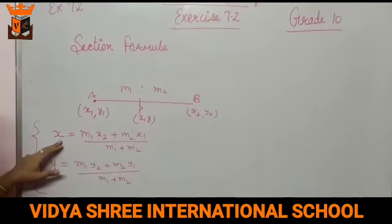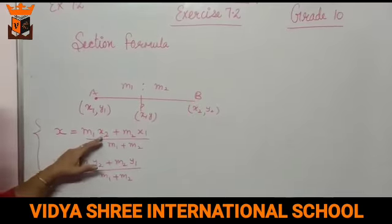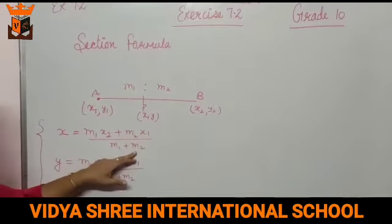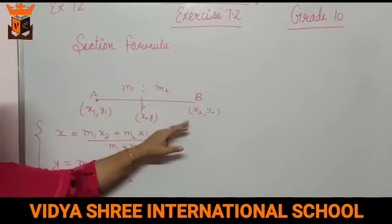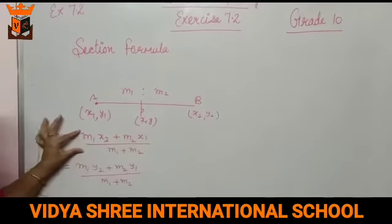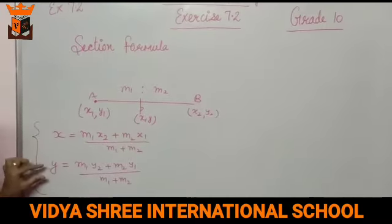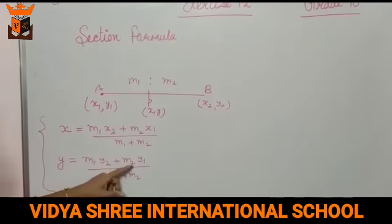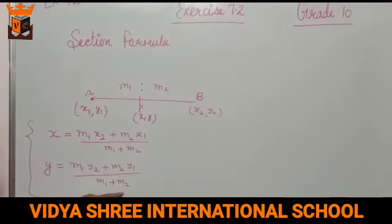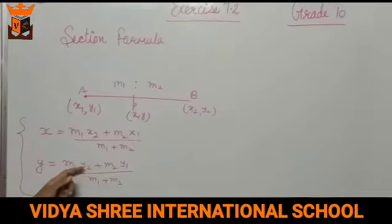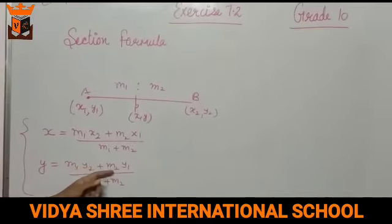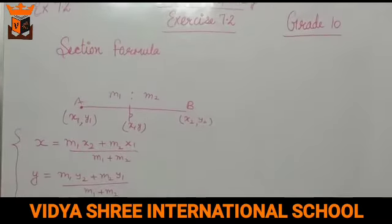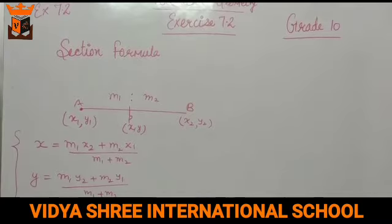Toh P point kya hoga? X ka formula hota hai: M1·x2 plus M2·x1 upon M1 plus M2. Yahan sare points likhe honge, sirf isme value put karni hai. Isi tarah se y ka formula hoga: M1·y2 plus M2·y1 upon M1 plus M2 — x1, x2 ki jagah bas y1, y2 aa jaega. So this is the section formula and now we will start the exercise.